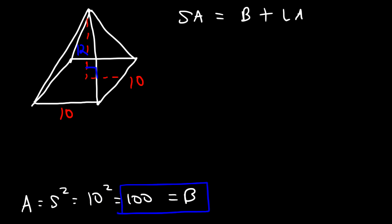So notice that this forms a right triangle, and this represents the slant height. Now if this is 10, that means this section here has to be 5. And so if we focus on that right triangle, if this side is 5 and this is 12, we have the 5, 12, 13 right triangle. And you can use the Pythagorean theorem to get that answer.